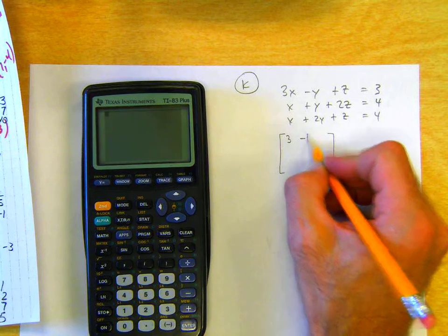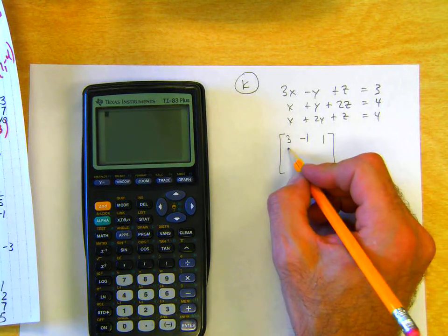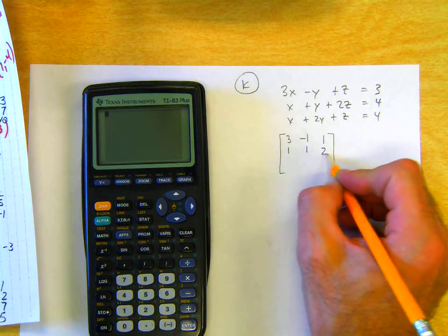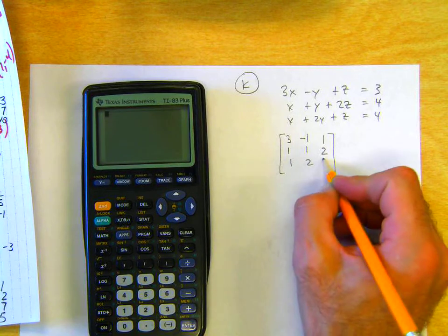We've got a 3 by 3 here, so we'll do it all calculator math. Write the coefficient matrix: 3, negative 1, 1, 1, 1, 2, 1, 2, 1.